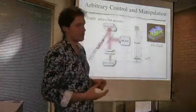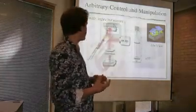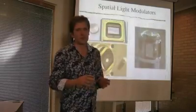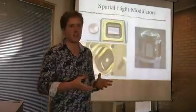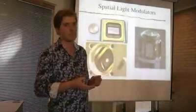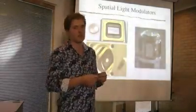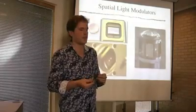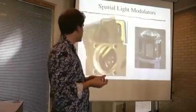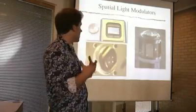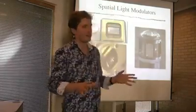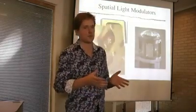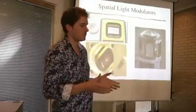The DMD consists of an array of 1024 by 768 tiny mirrors, each of which can be switched on and off independently. This allows us to create an overwhelming variety of different potentials.